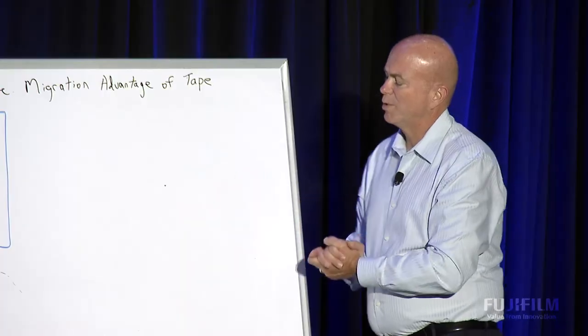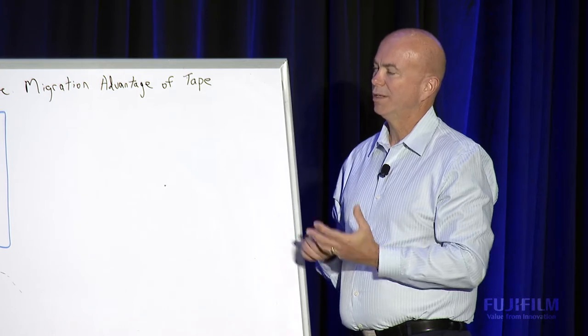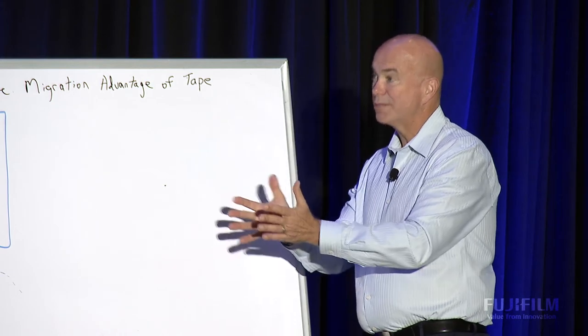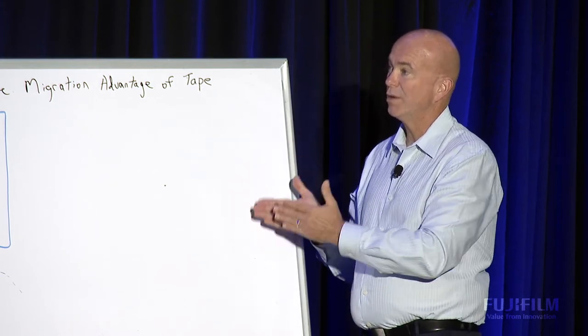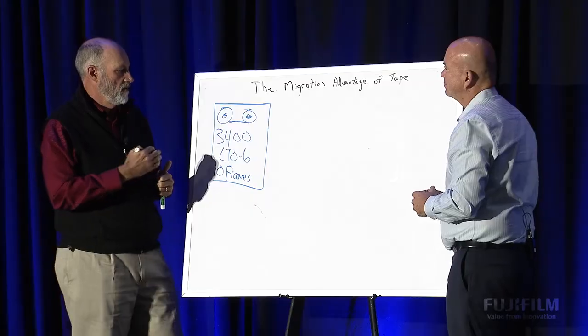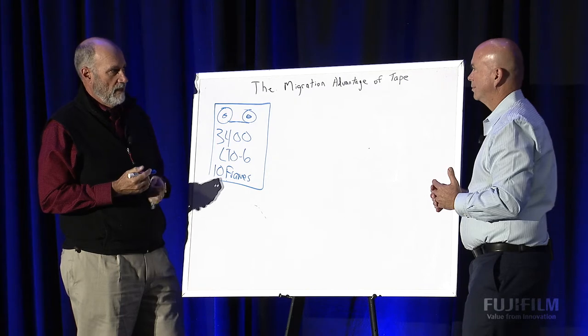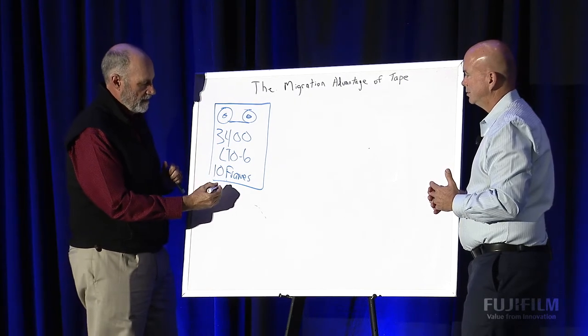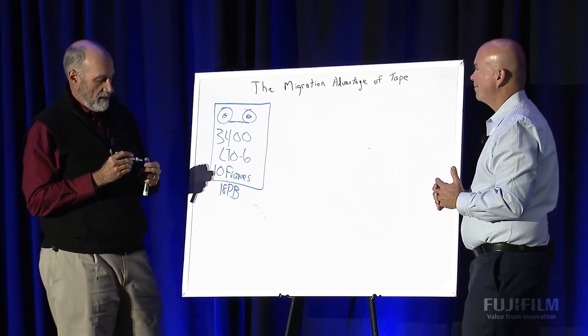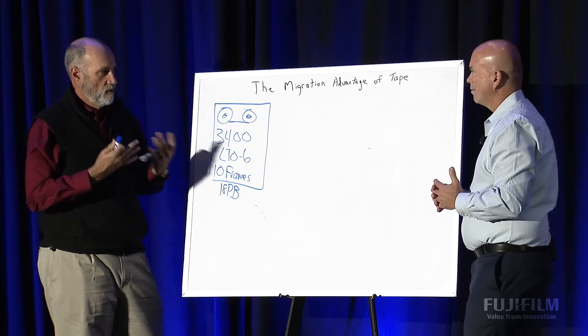You started out with 3,400 LTO-6 tapes. And then LTO-8, like most customers, you tend to go every other technology as you migrate, right? LTO-8 came on the horizon. What immediately appealed to you about that? It jumps from two and a half terabyte per tape to 12 terabytes per tape. Right now, this particular one sitting at LTO-6 was about 18 petabytes, and I'm already storing about 13 petabytes. So I'm starting to reach its limit there. We had to do something.